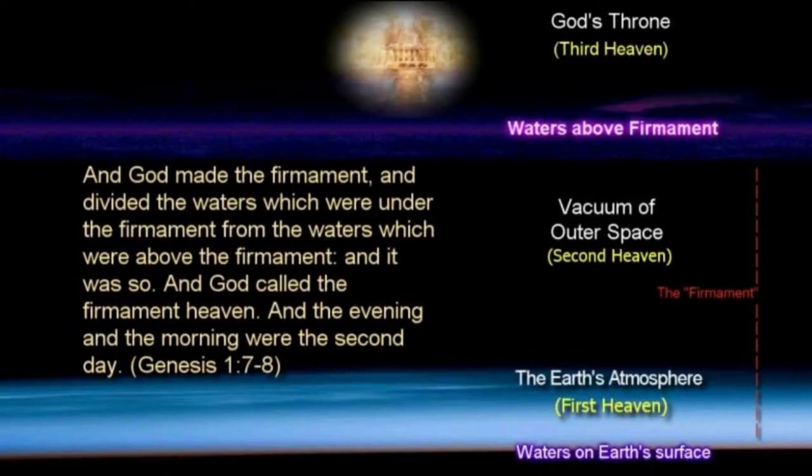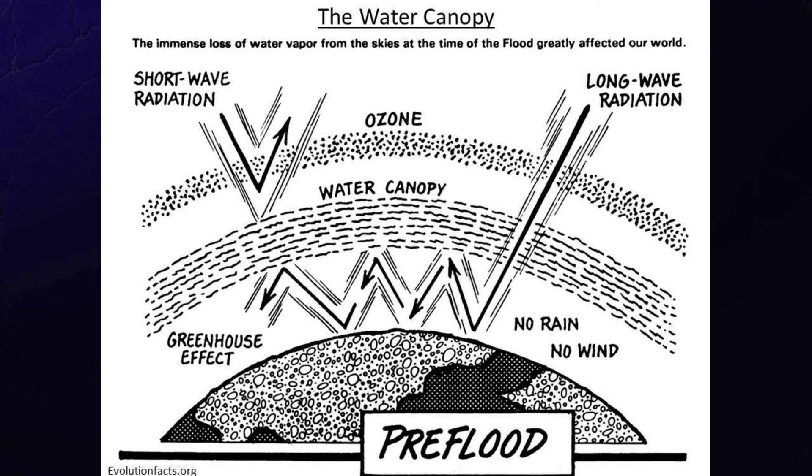Now, unfortunately, firmament is not a word we use very often, but we're told later on in the same chapter, Genesis chapter 1, that the birds flew in the firmament. So we know now that the firmament is the sky, dividing the water canopy above the sky from the sea below the sky.